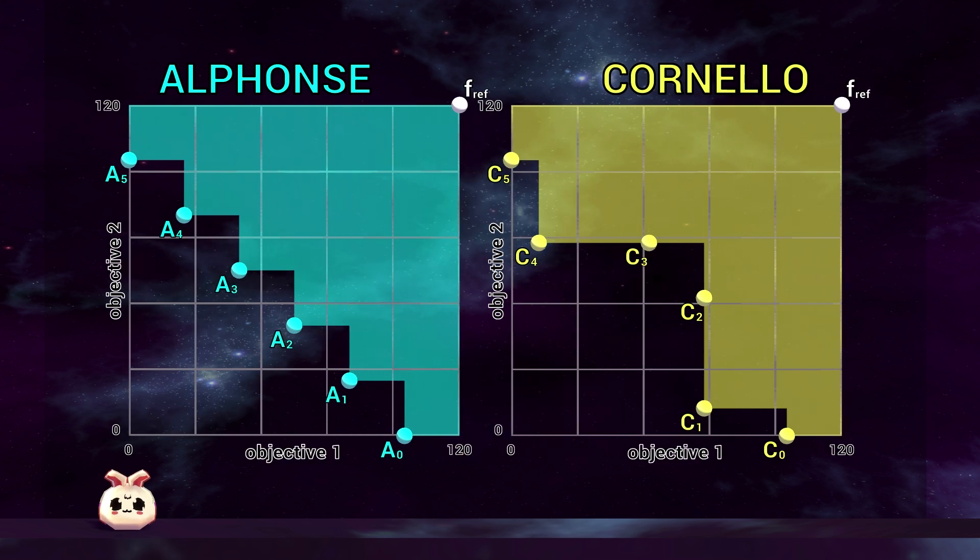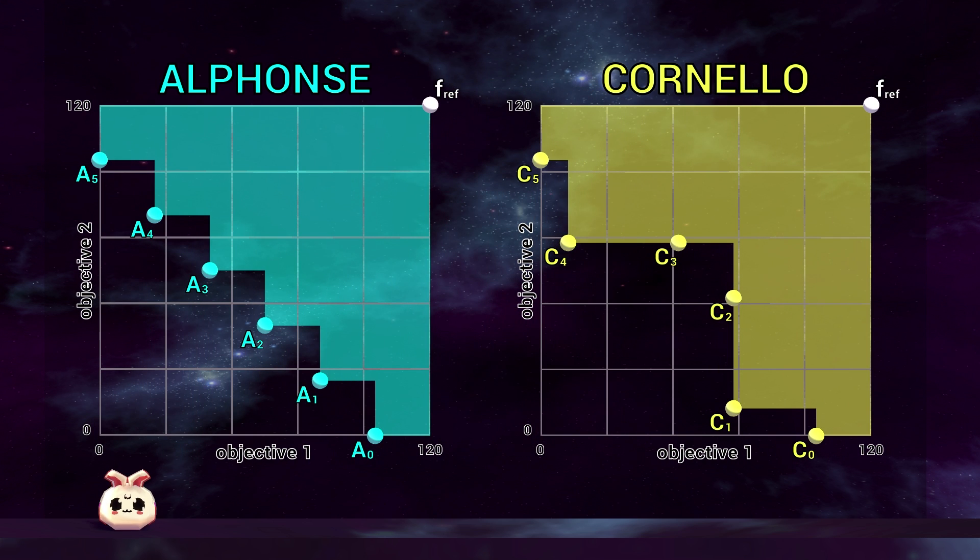The hypervolume indicator is quantified as a scalar value where greater values indicate a better result. Now you can see the hypervolume indicator values calculated for each solution set, confirming that Cornello has the better-performing solution set.